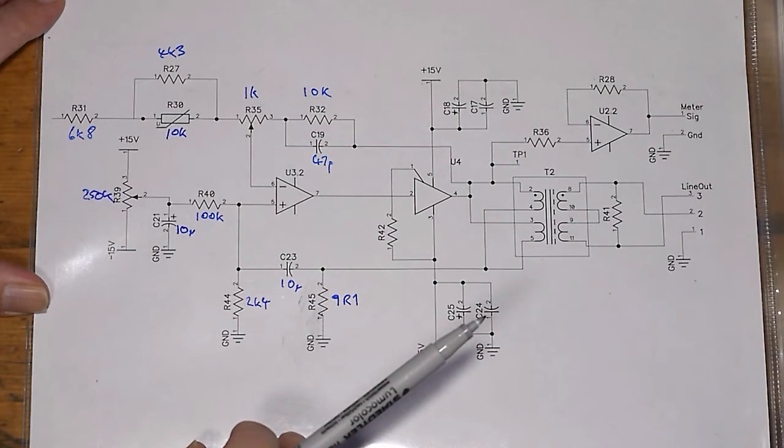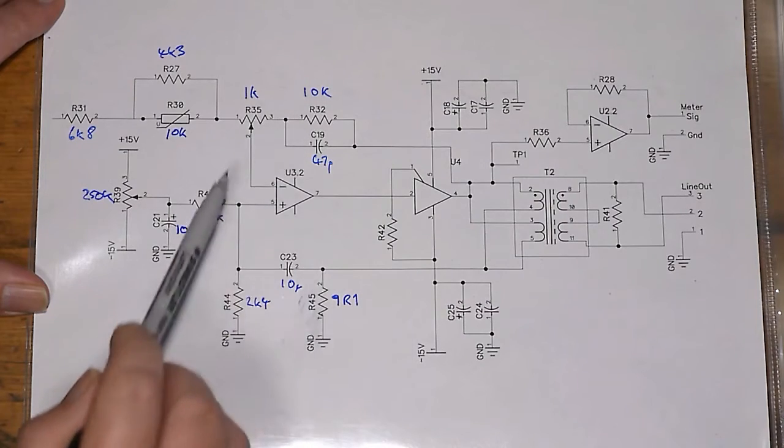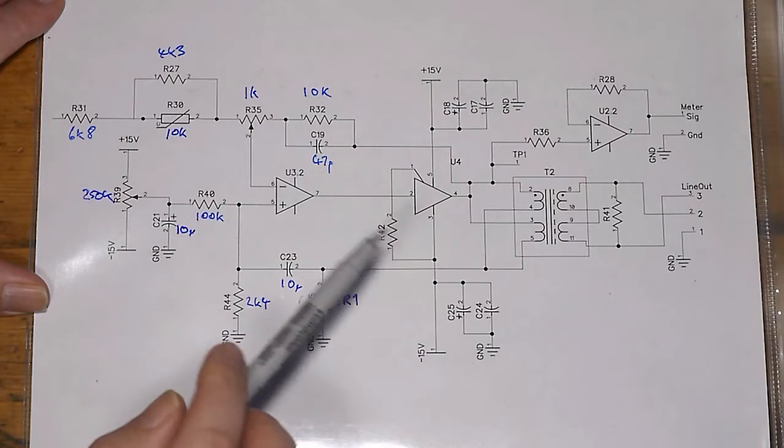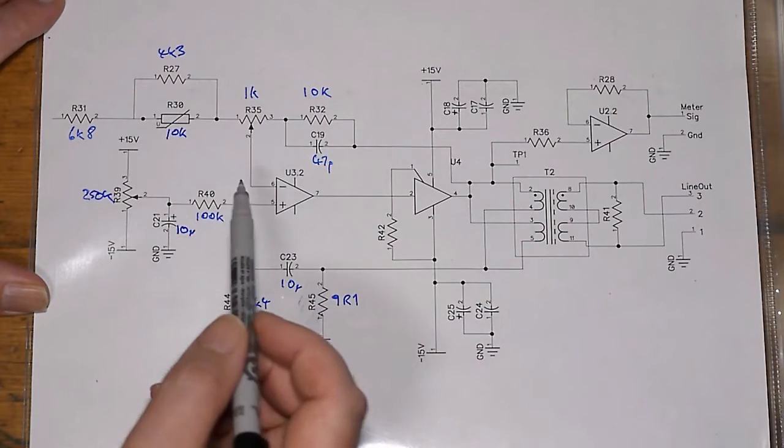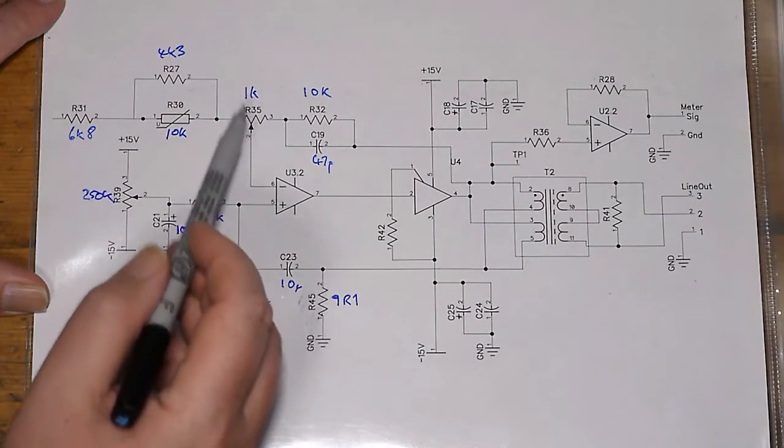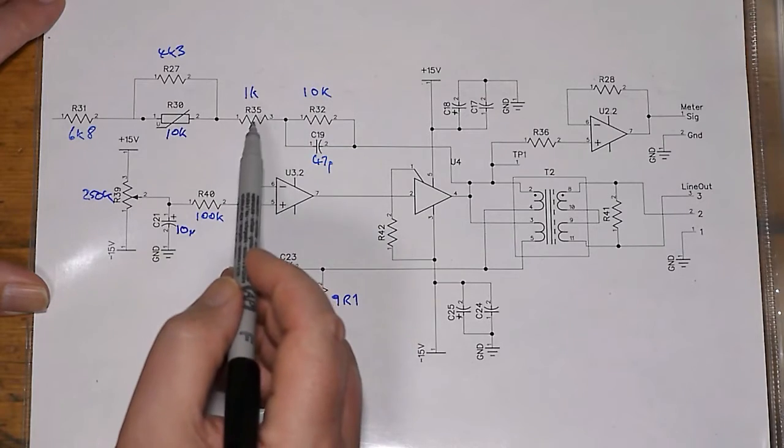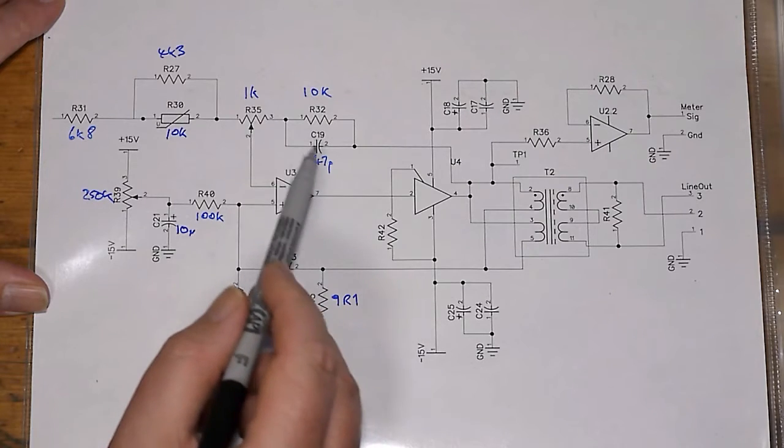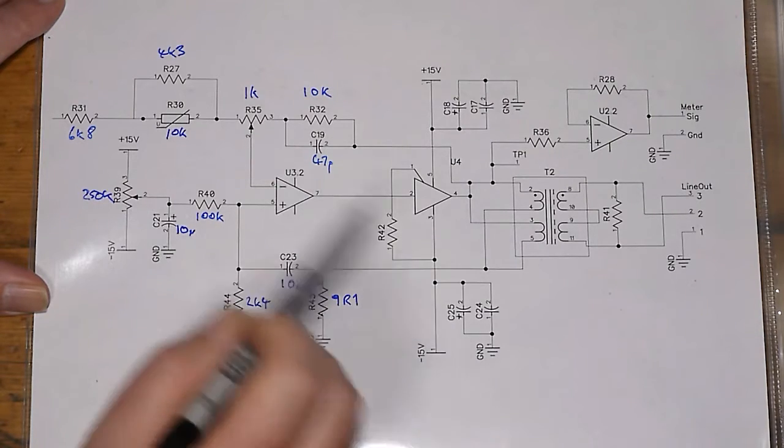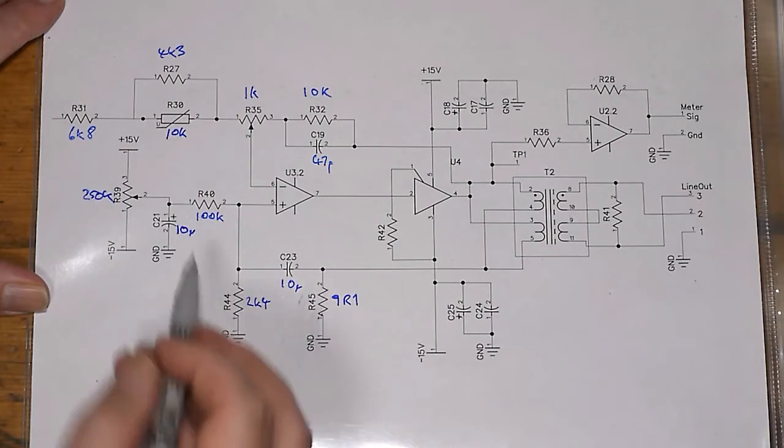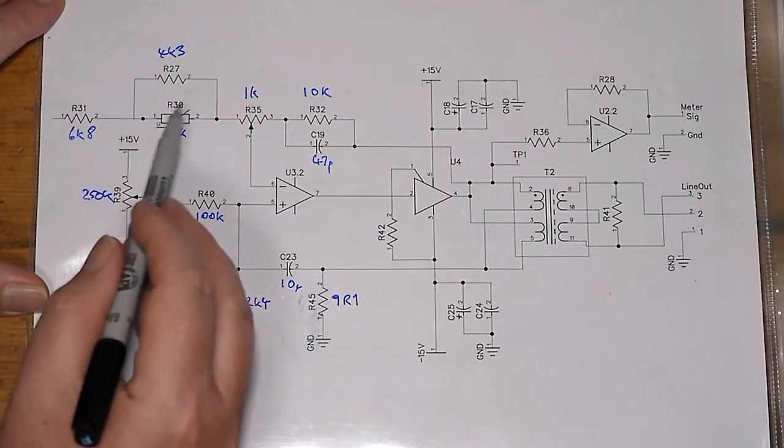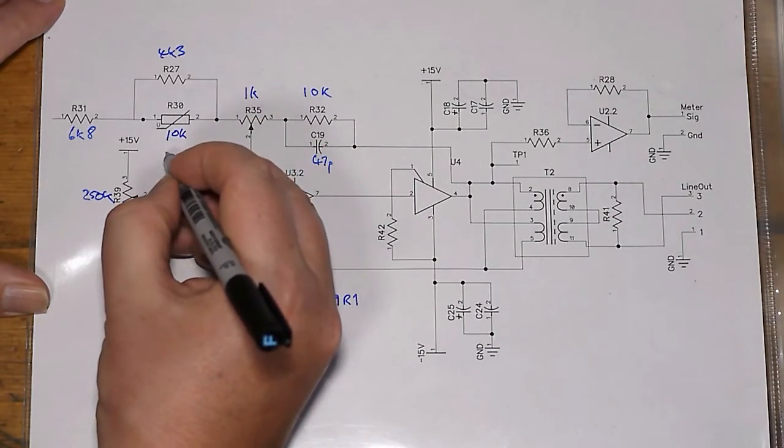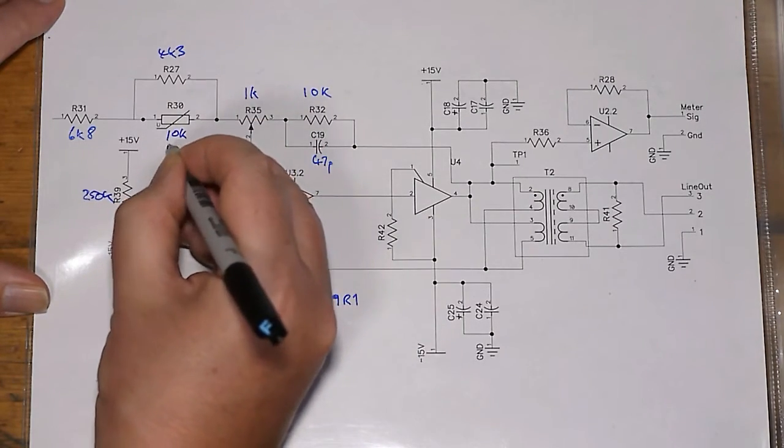So just quickly revisit what's going on here. It's a fairly typical inverting amplifier arrangement here. So the gain is set by the ratio of the resistances here to the resistances here inside the feedback loop. This capacitor here is just giving us a bit of a top-end roll-off. So the critical part of this is the use of this thermistor here, R30, which is a negative temperature coefficient thermistor, NTC.